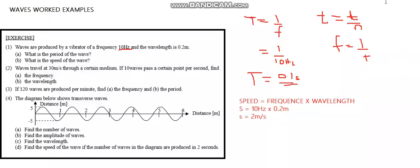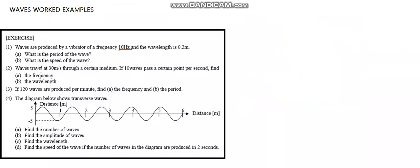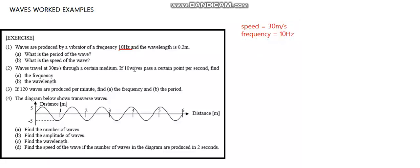Let's go to question 2. It says: water waves travel at 30 meters per second through a certain medium. If 10 waves pass through a given point per second, find the frequency and the wavelength. So in this case, we have speed equal to 30 meters per second. We also have 10 waves per second — that's actually the frequency. We've been asked to find the frequency and the wavelength.